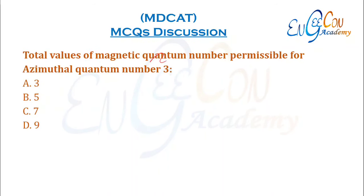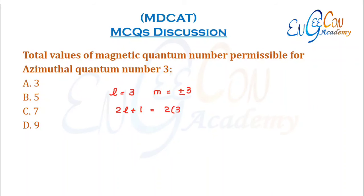Total values of magnetic quantum number permissible for azimuthal quantum number l = 3. If l = 3, then the values of m range from +3 to −3. Total values = 2l + 1 = 2(3) + 1 = 7 values.